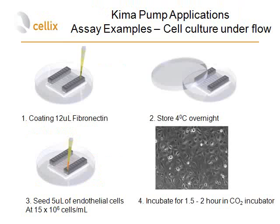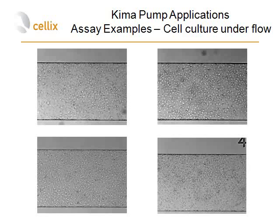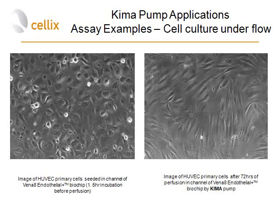This is an example of automated cell culture under flow, where we used endothelial cells and cultured them over 72 hours. The coating was done with fibronectin, stored overnight to allow adhesion of the molecules. We then took 5 microliters per channel of endothelial cells at a concentration of 15 million per milliliter and injected them into each channel. The biochip was placed into a CO2 incubator for two hours to allow adhesion. After two hours, all channels are quite confluent. After connecting to the pump and perfusing over 72 hours, the phenotype of the cells changes completely from very rounded and separated to stretched with very tight junctions.